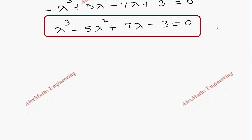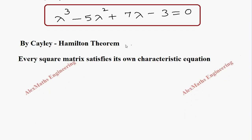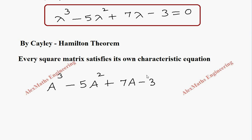By the Cayley-Hamilton theorem, every square matrix satisfies its own characteristic equation. We can substitute matrix A in place of lambda. So we get A cubed minus 5A squared plus 7A minus 3, and since everything is a matrix, we cannot write the number alone, so we write 3I equal to 0.